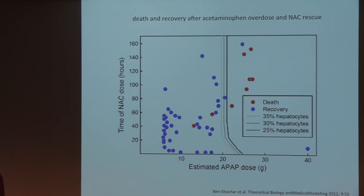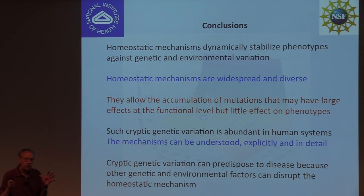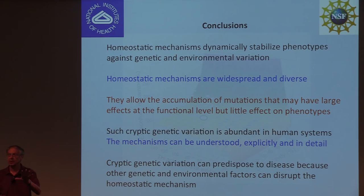Let me just show you the conclusions. We think of these regulatory mechanisms in these metabolic systems as homeostatic mechanisms, just like you have homeostatic mechanisms in physiology. These are dynamic systems that stabilize phenotype against all kinds of environmental variation that happens on short and long term scales, and which at the same time is protective against genetic variations that occur on a much longer time scale. They're widespread and diverse. They allow the accumulation of mutations that may have large effects at the functional level, but little effect at phenotypes. That cryptic genetic variation is abundant in human systems. We think we can explicitly understand how that operates, why that is there. It can predispose to disease because other genetic environmental variables can disrupt that system, tilt the landscapes, and now you're ill. This just acknowledges all my collaborators and students. Thank you.